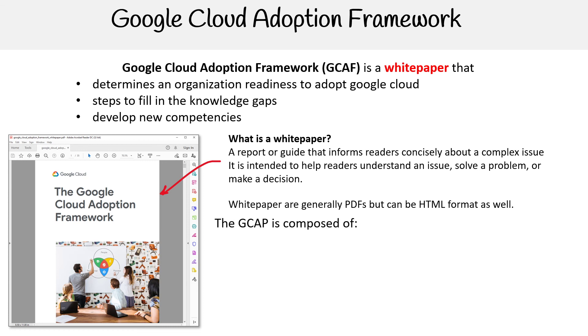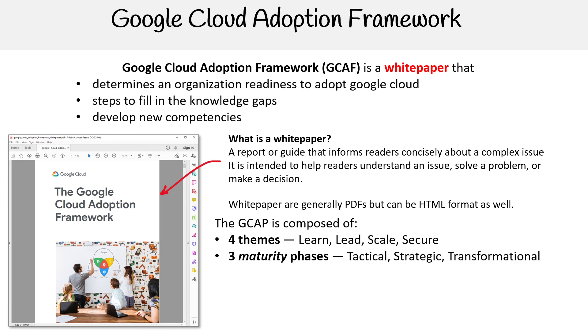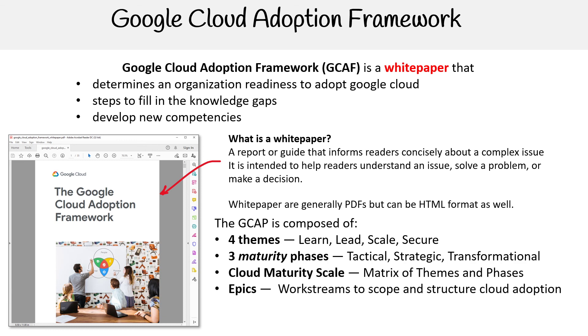The GCAF is composed of four themes, three maturity phases, the cloud maturity scale, epics and programs. So let's get into it.